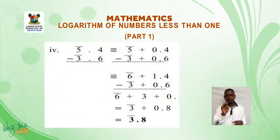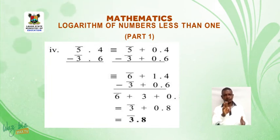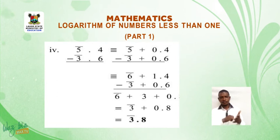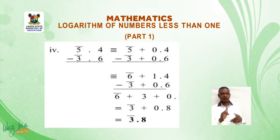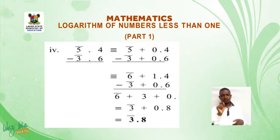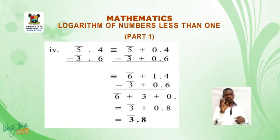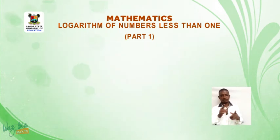The fourth one: bar 5.4 minus bar 3.6 is equivalent to bar 5 plus 0.4 minus bar 3 plus 0.6, which is equivalent to bar 6 plus 1.4 minus bar 3 plus 0.6. So this gives us bar 3 plus 0.8, which is equal to bar 3.8.